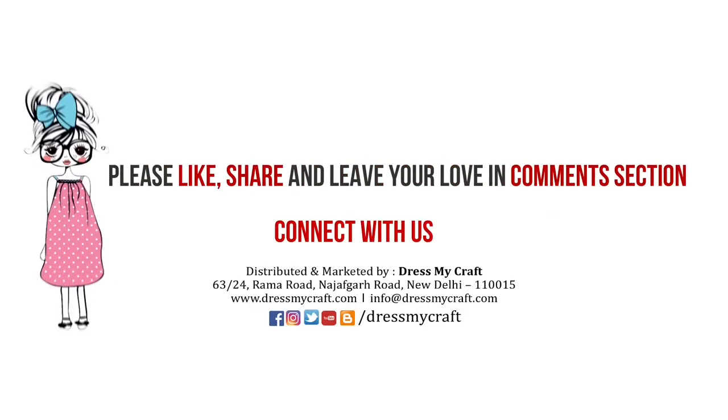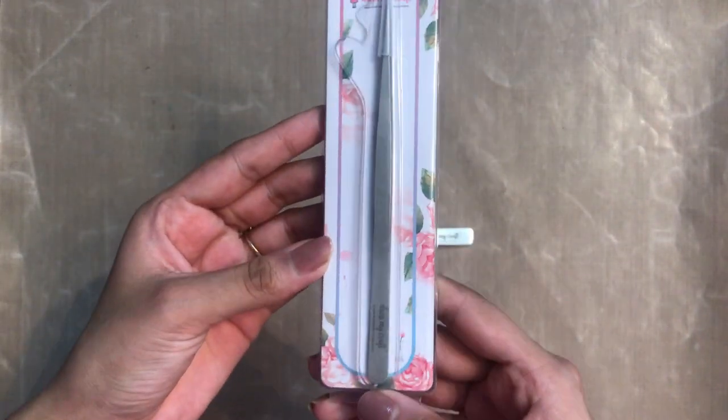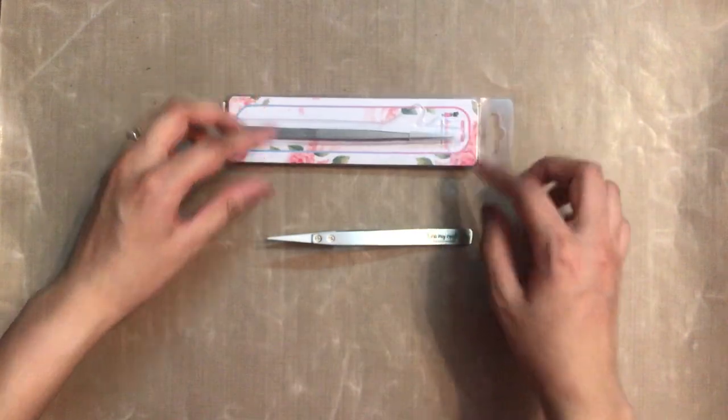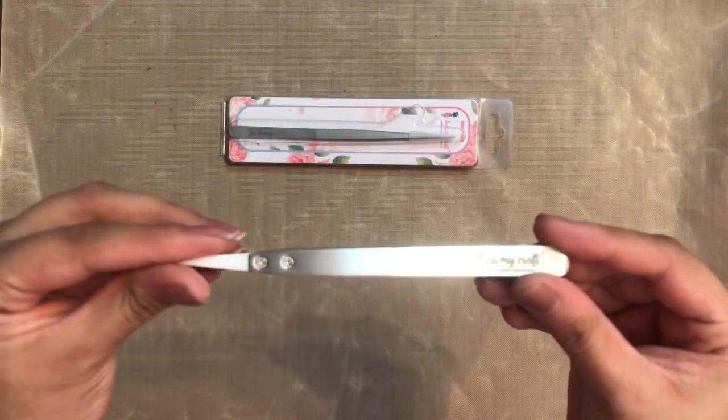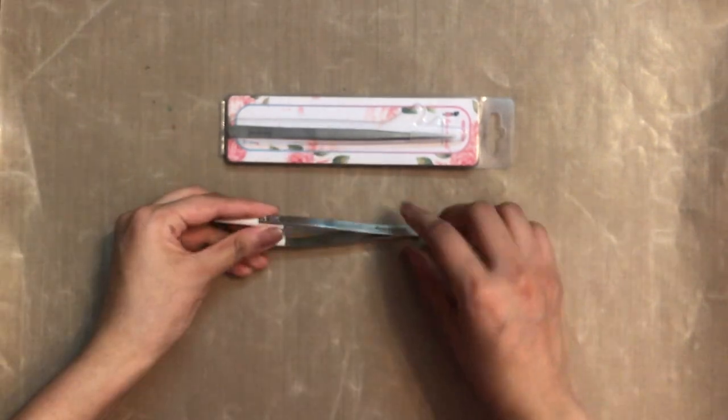So let's get started. This is the first tweezer which Dress My Craft has - the fine and sharp tip tweezer, 140mm size. And that's the second tweezer by Dress My Craft - the heat resistant tweezer, size 130mm by 9mm.